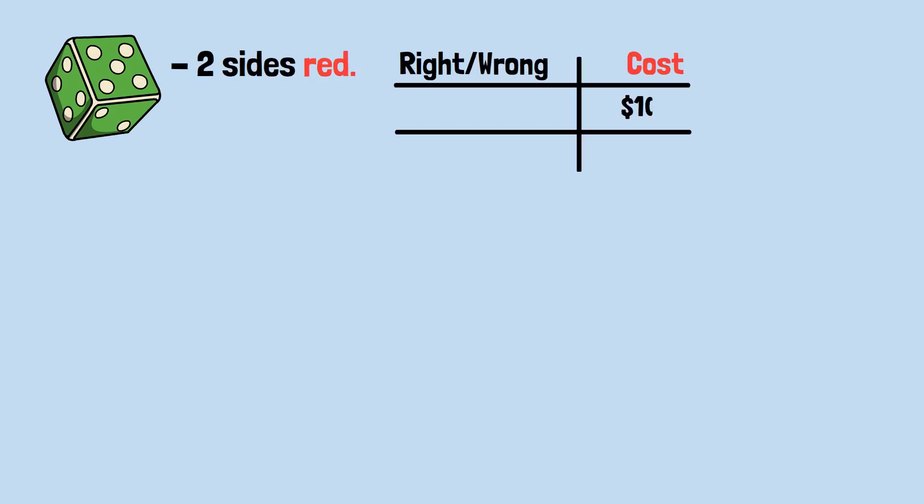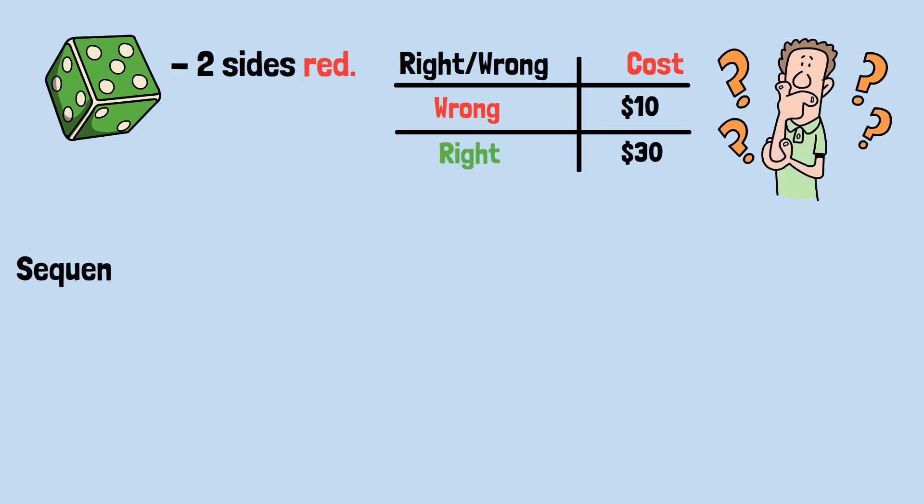Let's see another example. Four sides of this die are green, and the other two sides are red. Same betting terms as the coin flip game. Lose $10 if you're wrong. Win $30 if you're right. Which outcome is more likely? Sequence 1: Red, green, red, red, red.